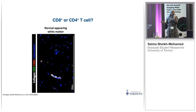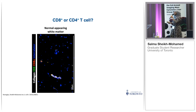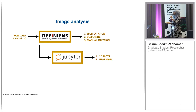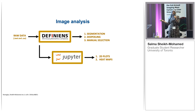Looking at T cells: in a normal brain you shouldn't find T cells — there shouldn't be immune cell infiltration. In the normal appearing white matter we don't find any T cells, which is perfect. Compare that to the active lesion, where we see CD8 positive T cells and CD8 negative T cells, confirming immune cell infiltration has happened in this person's brain. That was a nice summary of the qualitative analysis — for more images, please look at the actual paper.